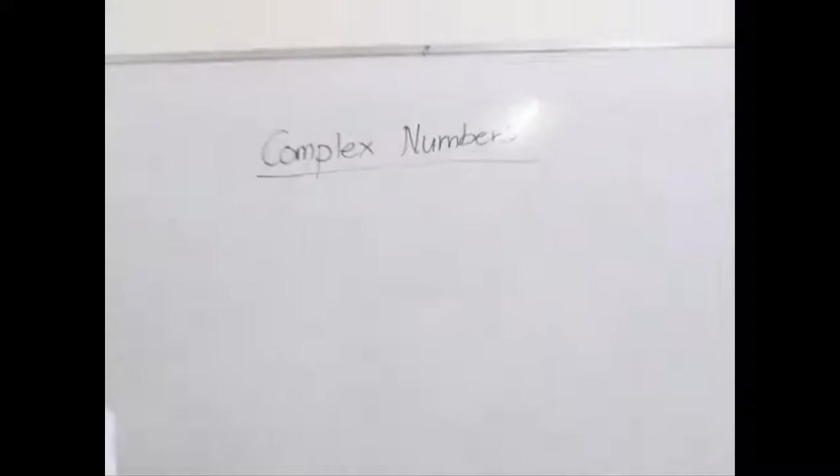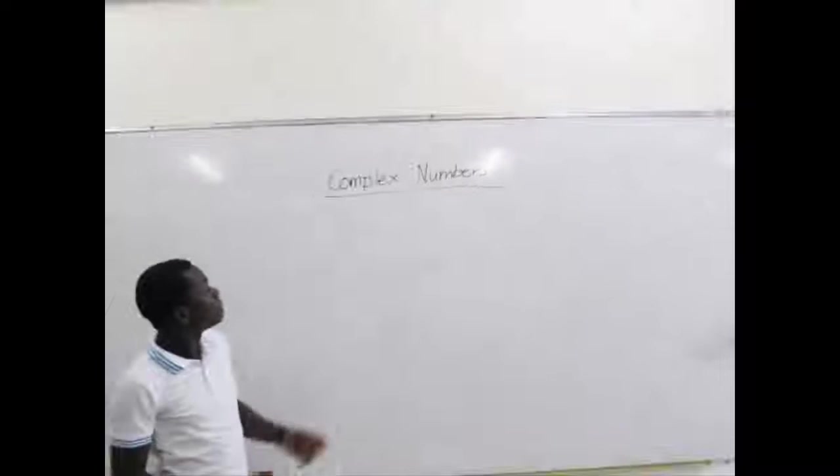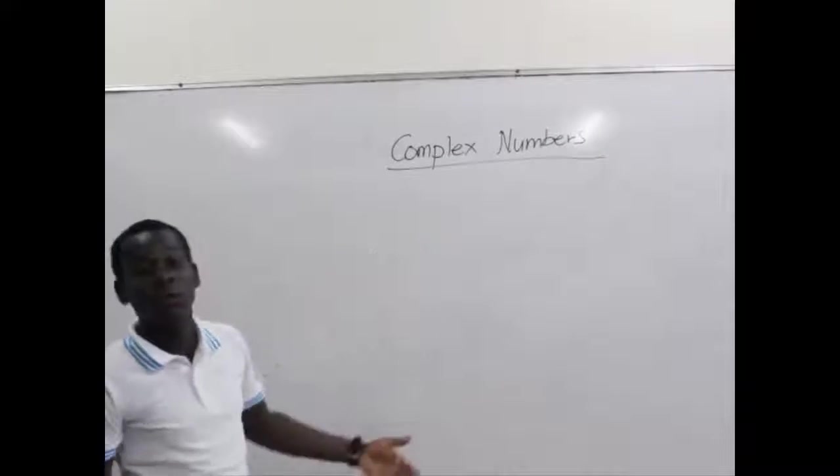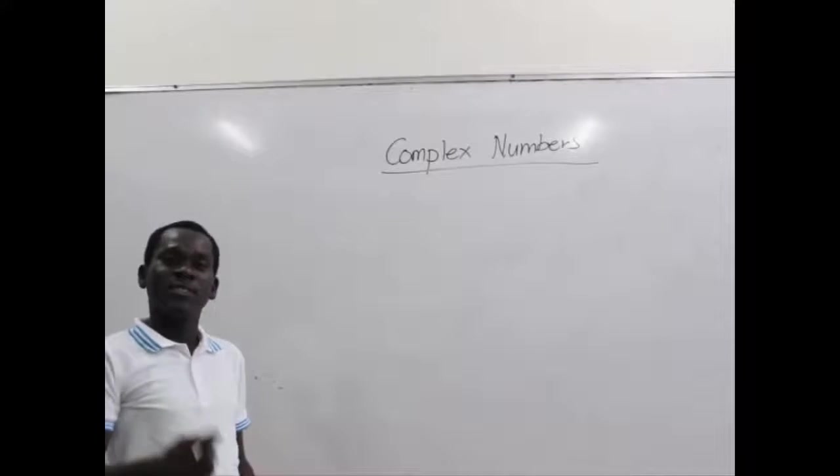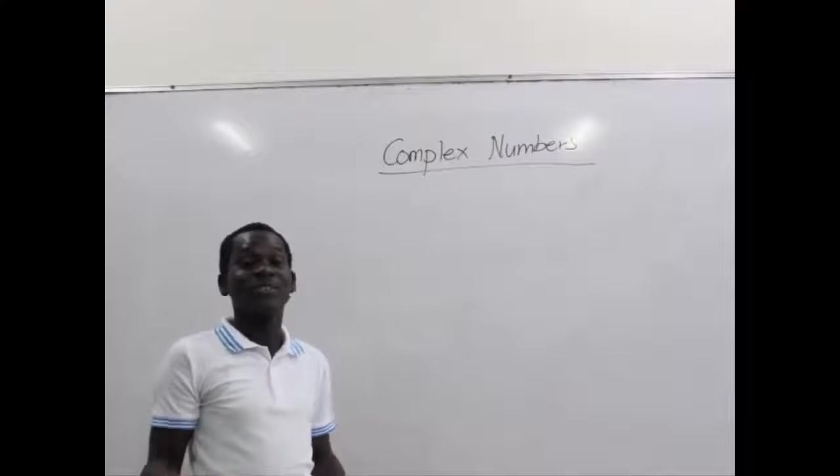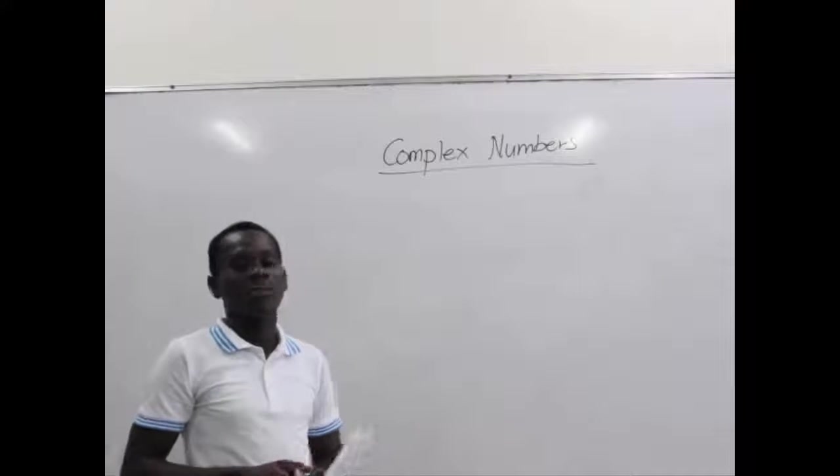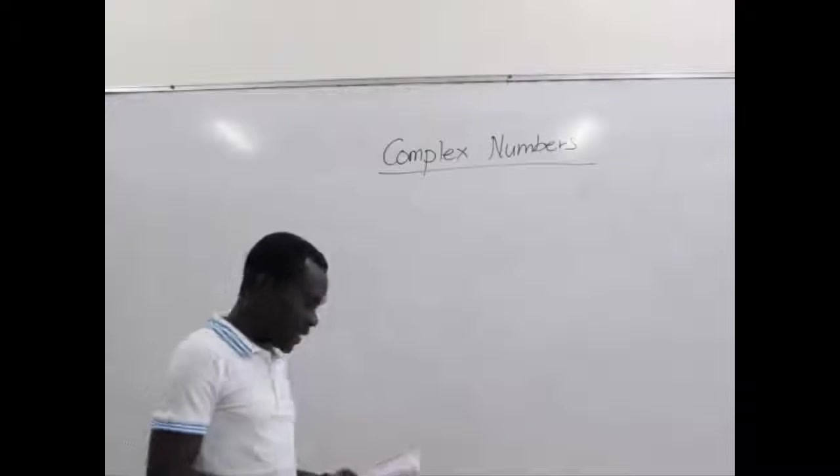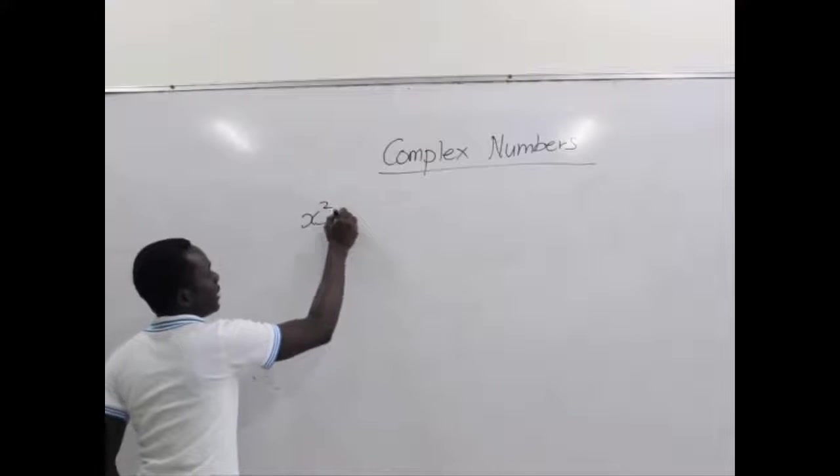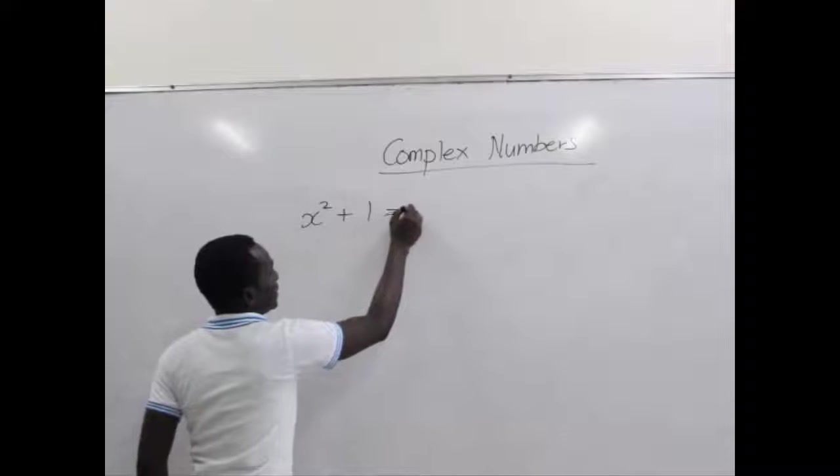Now, how come did we even get what we call complex numbers? This is what happened. One day, a mathematician was solving a simple quadratic equation which was in the form x² + 1 = 0.